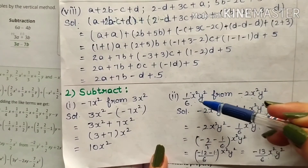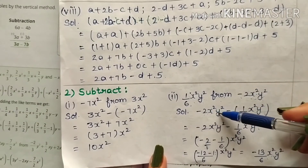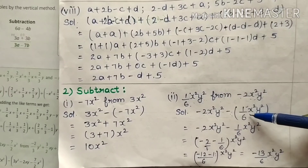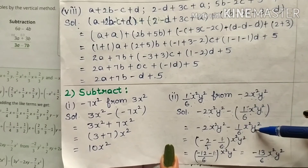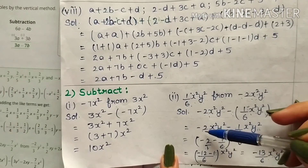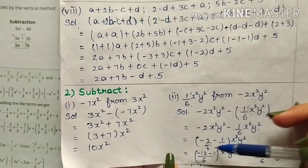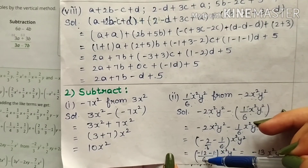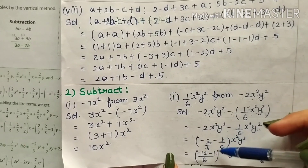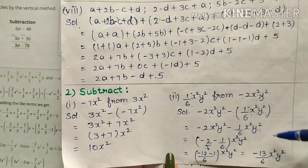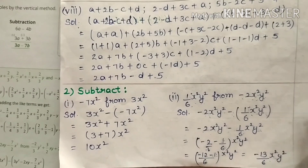Second: subtract 1 by 6 x square y square from minus 2x square y square. Solution: minus 2x square y square minus 1 by 6 x square y square. Taking x square y square as common: minus 2 minus 1 by 6. LCM of 1 and 6 is 6, so minus 2 multiplied by 6 is minus 12, minus 1 multiplied by 1 is minus 1. Minus 12 and minus 1 is minus 13 over 6 x square y square. Thank you and have a nice day.